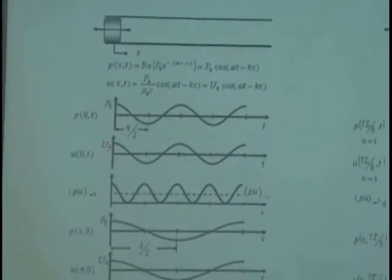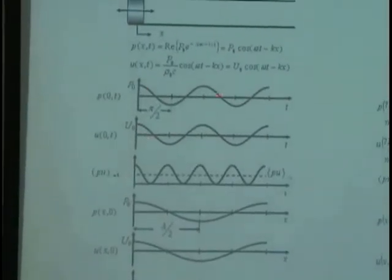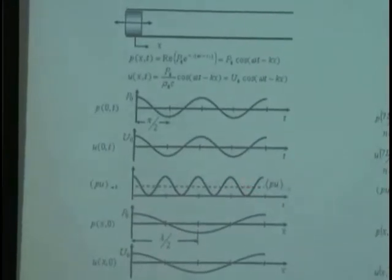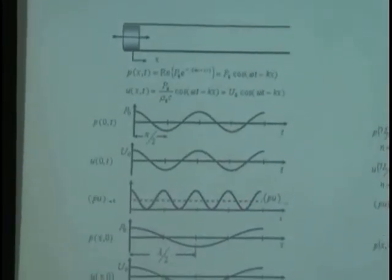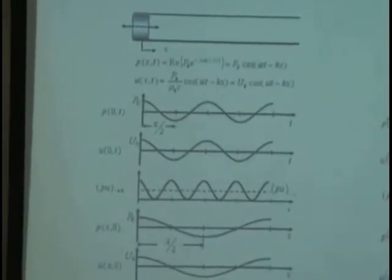And the intensity at X equal zero is the multiplication of this. So, the frequency of intensity is increased by two omega.